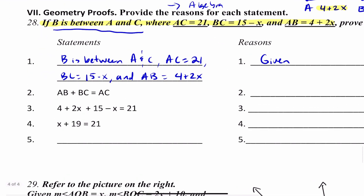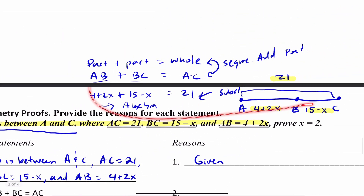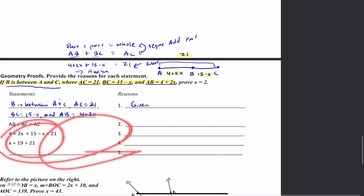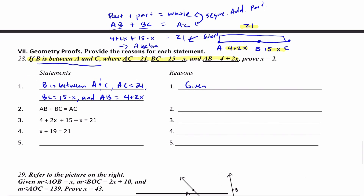Let's go ahead and take a look at the proof. When I did all this scratch work, it gave me an idea of what to do. So statement 1: B is between A and C, AC equals 21, BC equals 15 minus X, and AB equals 4 plus 2X — that's given. Then statement 2: AB plus BC equals AC — that's the Segment Addition Postulate.